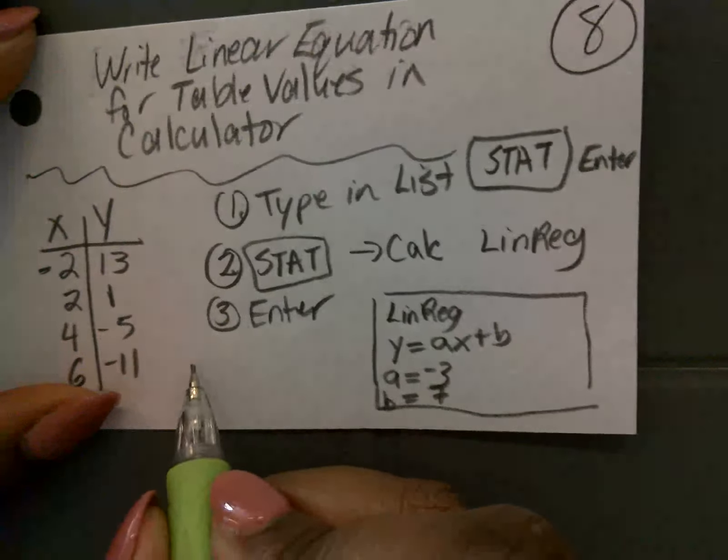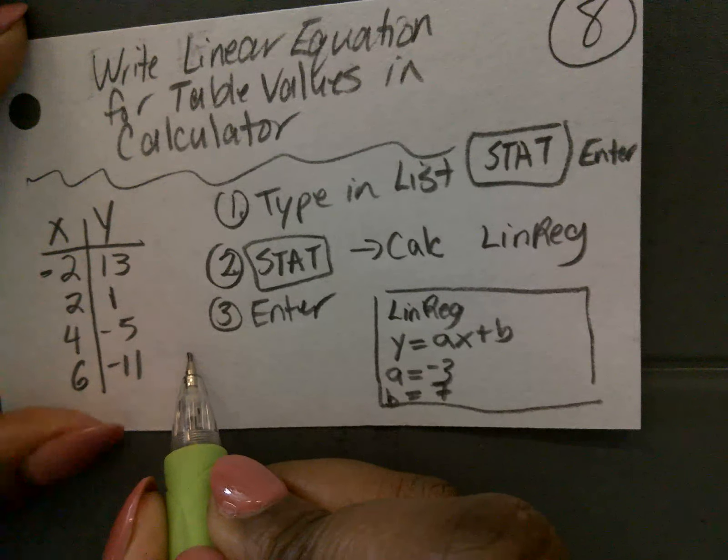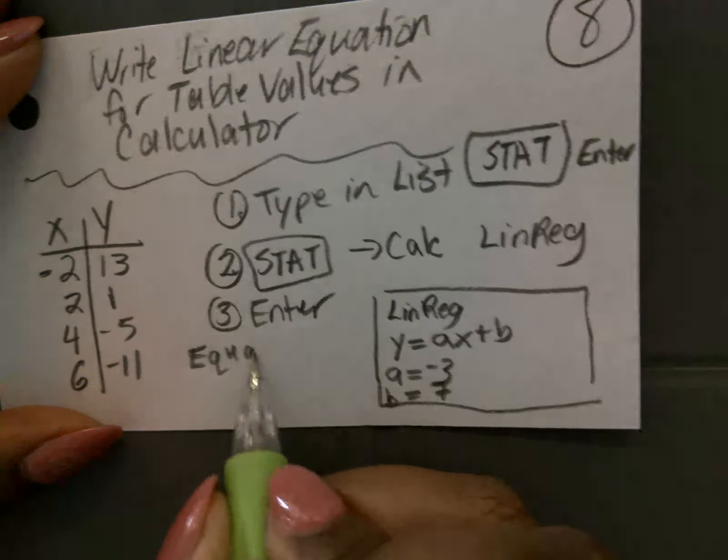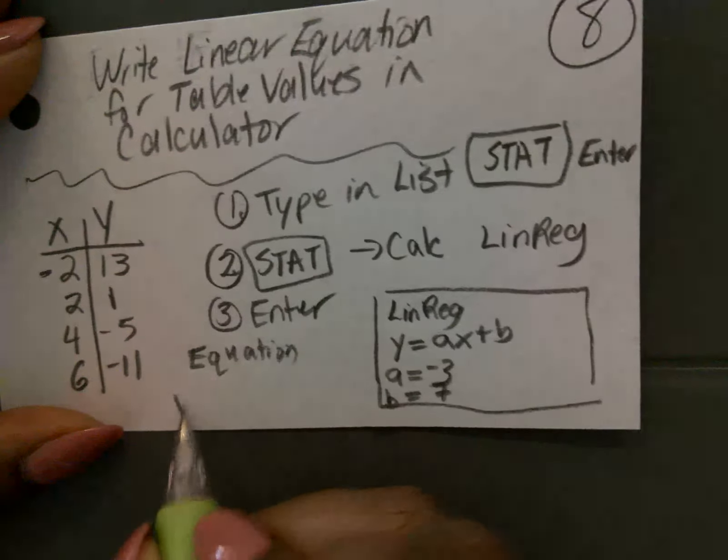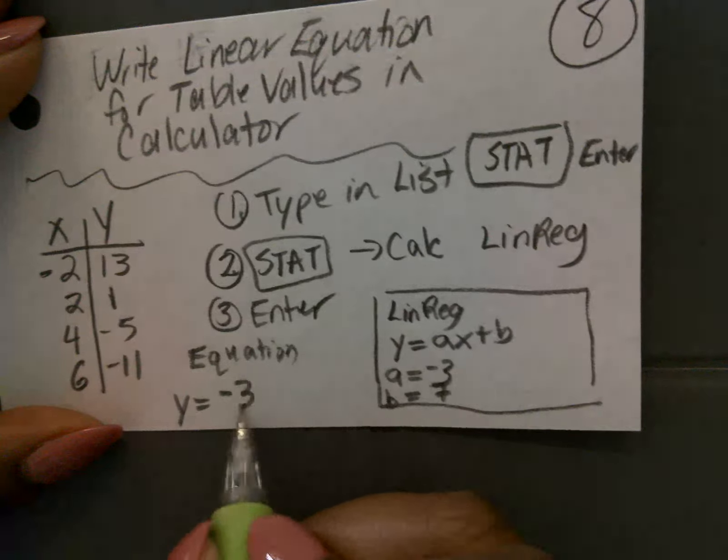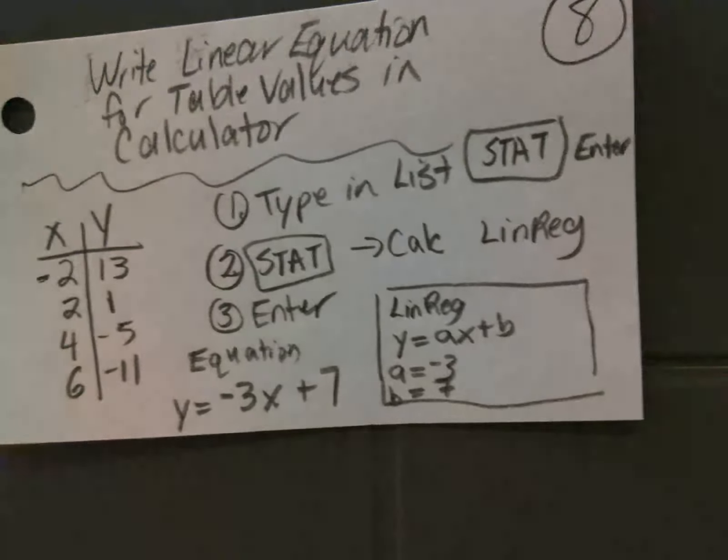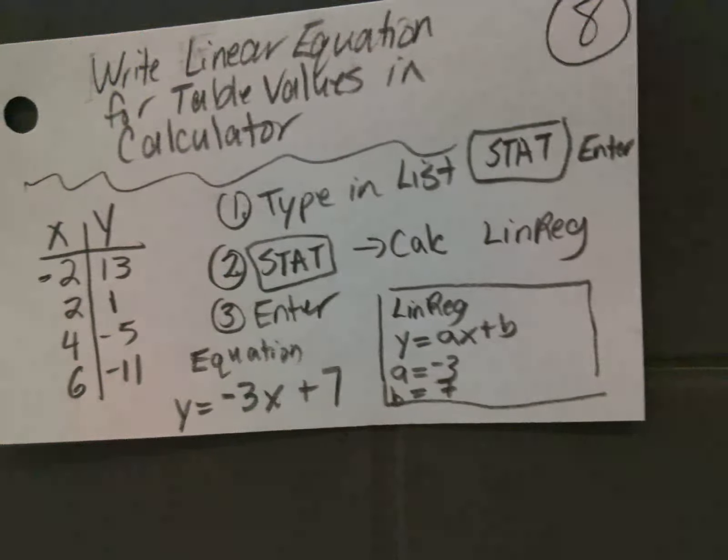So the slope, of course, is a for a linear equation, and the b is the y-intercept. So what you should get out of that is what? How would you write the equation? What is the equation going to be? Y equals negative 3x plus 7, all right? Very good.